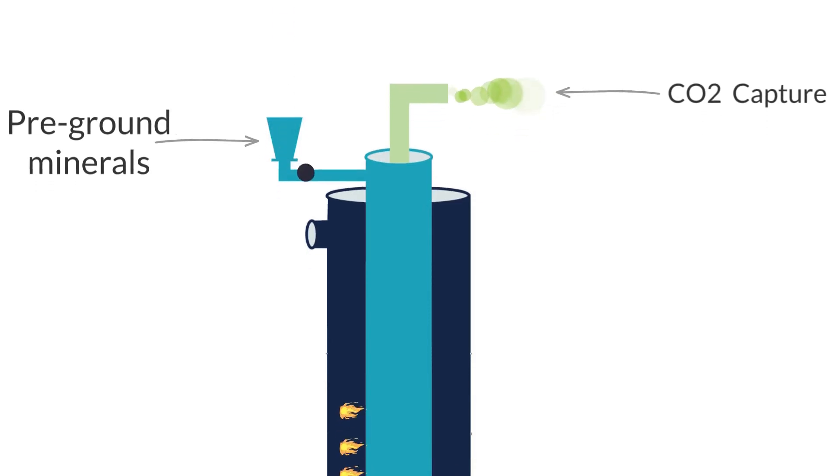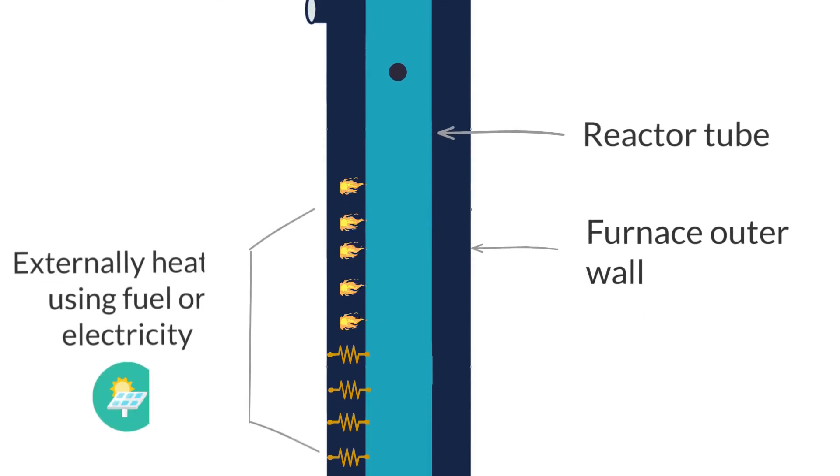Calyx pre-grinds minerals into a fine powder, which is then fed into an externally heated reactor for flash heating.